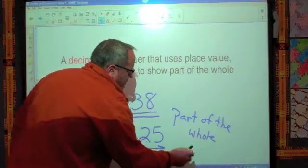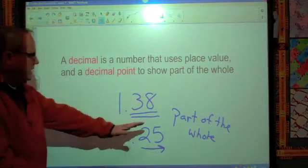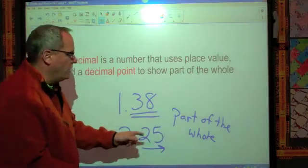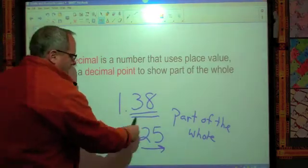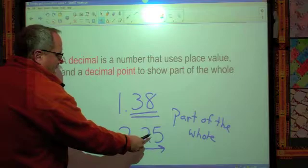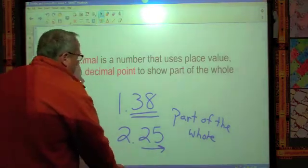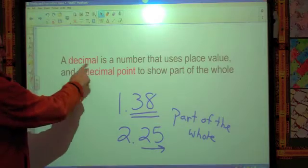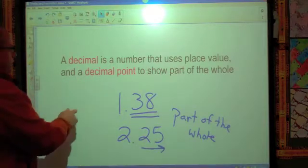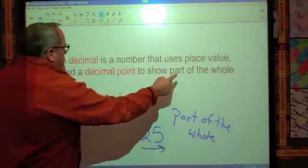So pretty simple there. Part of the whole. That's all we're talking about. Anything to the right of the decimal is a part of a whole. Because remember we're working towards anything here. We want to get it to be a hundred so that it would be equal to one whole and move forward. So dealing with that, we're just simply talking about a decimal is a number that uses place value and a decimal point to show part of the whole.